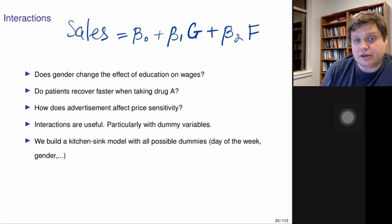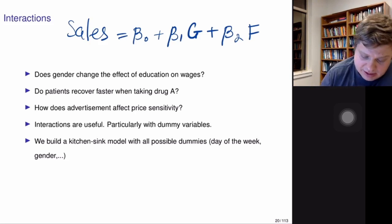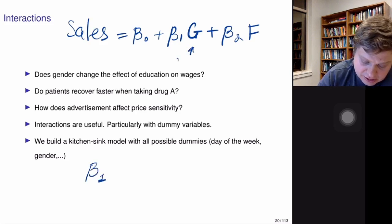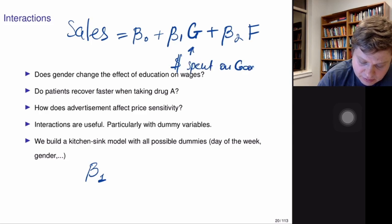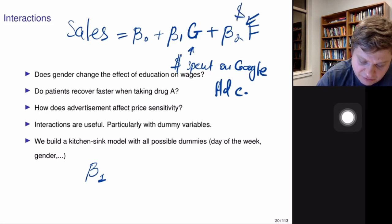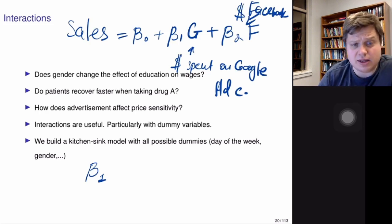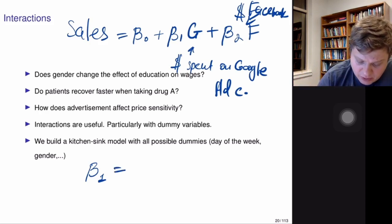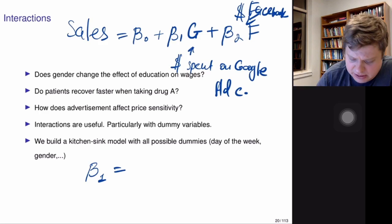So how do we model this relationship? We will say that G is the dollars spent on Google campaign and F is dollars spent on Facebook campaign. The coefficient beta one tells you how much effect the money you spend on Google has on your sales. The way we model the interaction between the two marketing campaigns is to say that the effect of the Google advertisement is itself a linear function of the money you spend on Facebook.